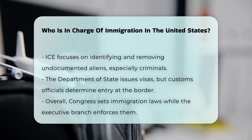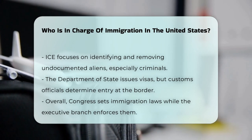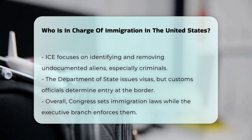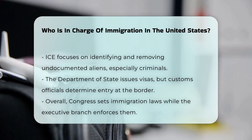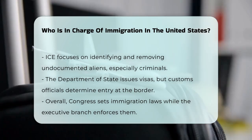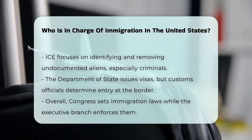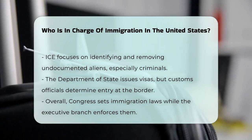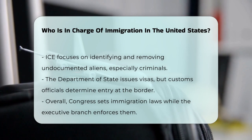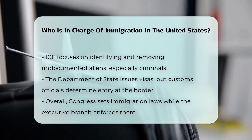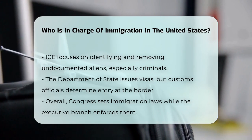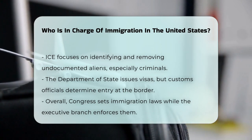So to sum it up, Congress sets the laws and policies for immigration, while the executive branch, through agencies like DHS, USCIS, ICE, and the Department of State, enforces and administers these laws.